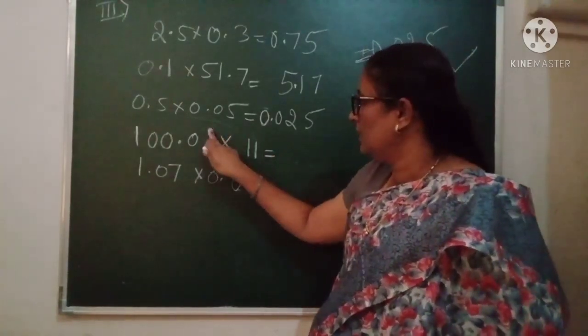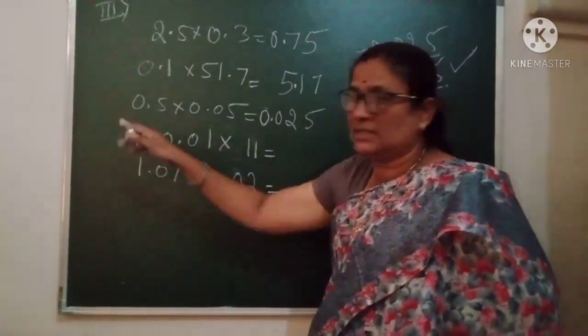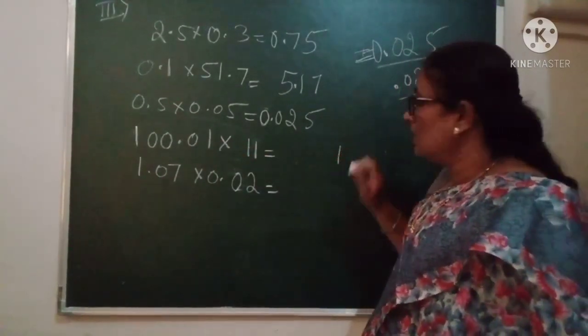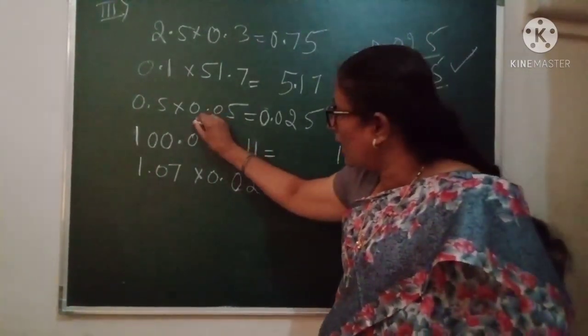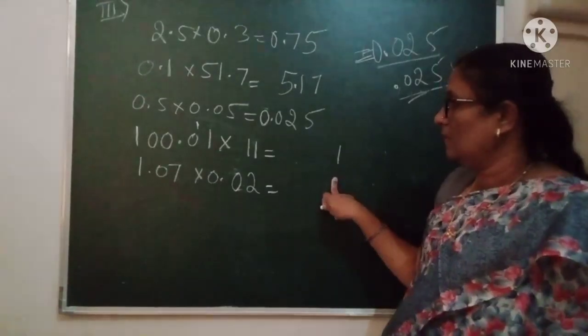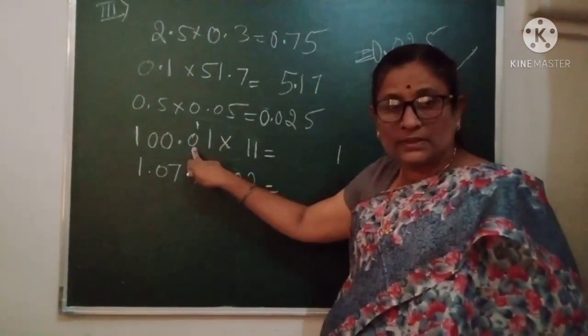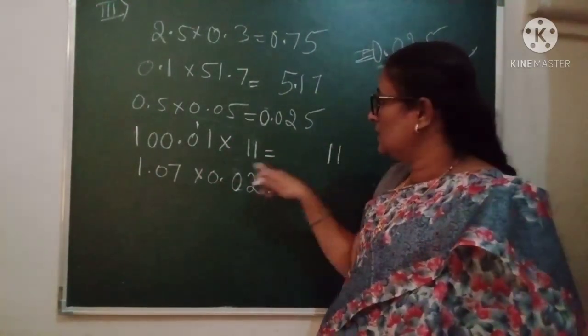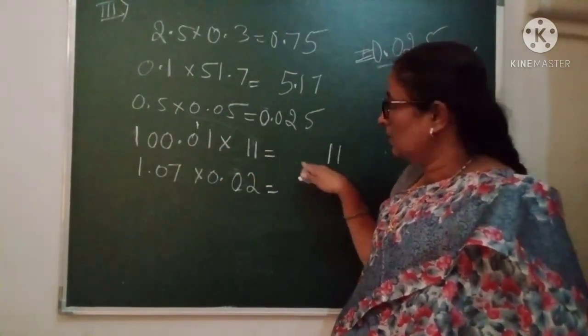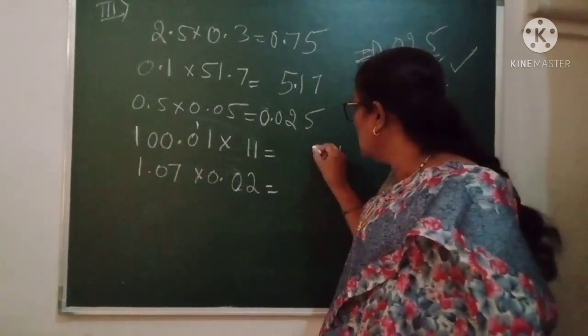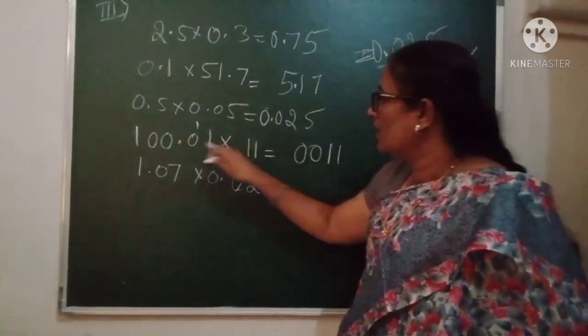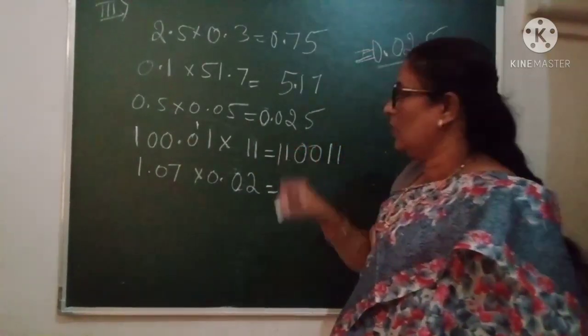First we multiply with these digits. This is very simple. So 11 × 1 is 11, I am giving 1 here and 1 as carry. 11 × 0 is 0, plus 1 is 1. Then we don't have any carry, finish. Now, 11 × 0 is 0, 11 × 0 is 0, and 11 × 1 is 11.